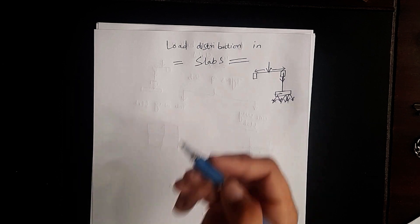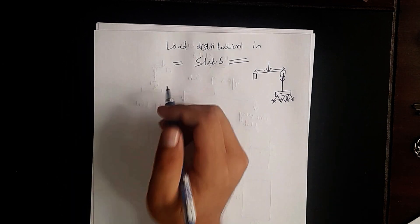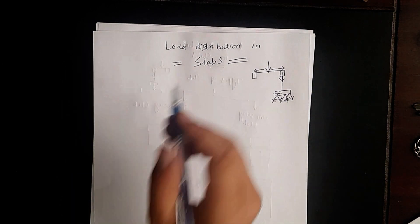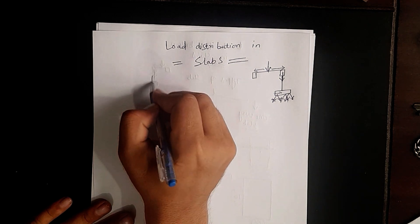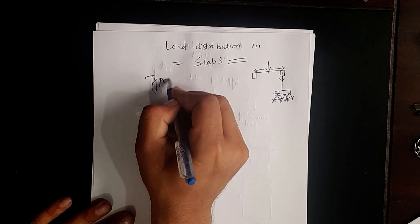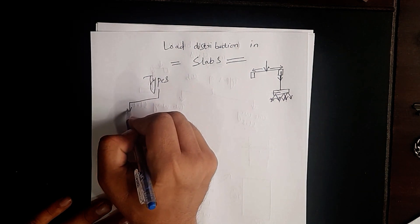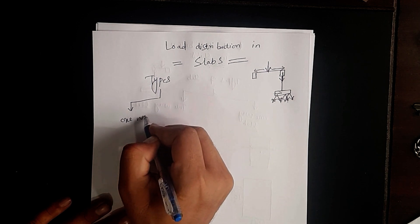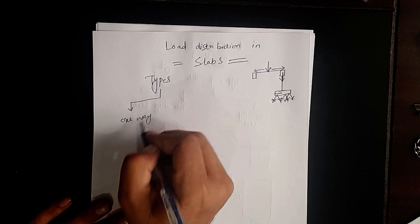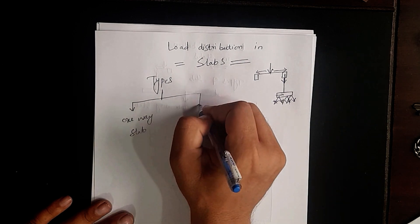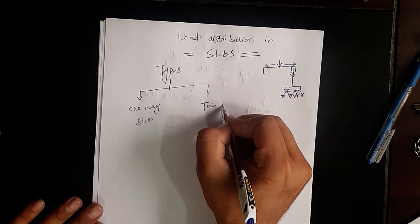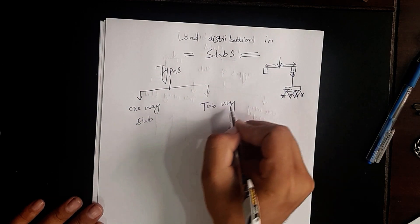Now, the load distribution mechanism of a slab — to understand this, you need to know about the types of slabs. Basically, we have two types of slabs: one-way slab and two-way slab.